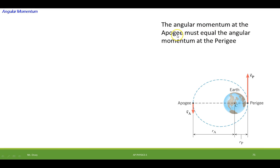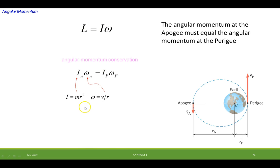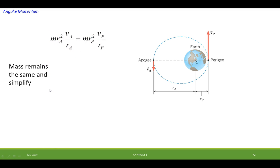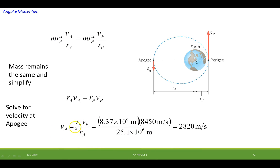We know that angular momentum must be conserved, so the momentum at the apogee has to equal that of the perigee. For conservation of angular momentum, apogee equals perigee. We know that I, for a point mass, is equal to mr squared. And we know that omega is angular, so we have to replace it with its linear equivalent, since we were given the linear speed. Now we make those substitutions and we can see what cancels out. The mass is the same on both sides, so we can get rid of that, and we can cancel one of the R's. So now we're left with this ratio, and if we want to solve for the speed at the apogee, it follows directly from that.